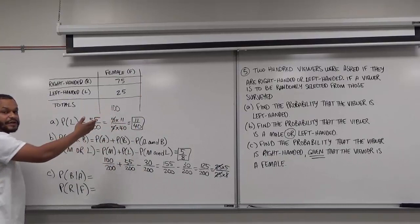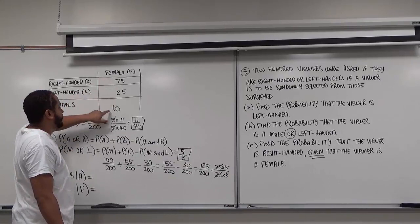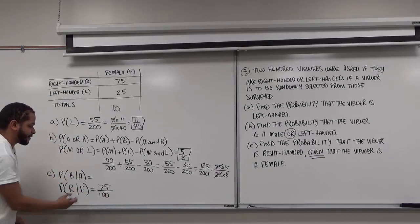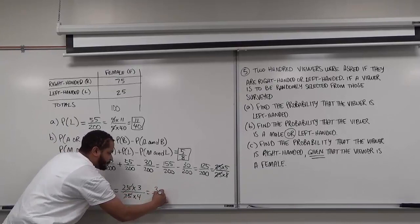Now that we're only looking at the female column, we find the probability that the viewer is right-handed. There are 75 right-handed females out of 100 total females. So we have 75 over 100. This reduces using a common factor of 25: 25 times 3 over 25 times 4, giving us 3 over 4. That solves our conditional probability. Thank you.